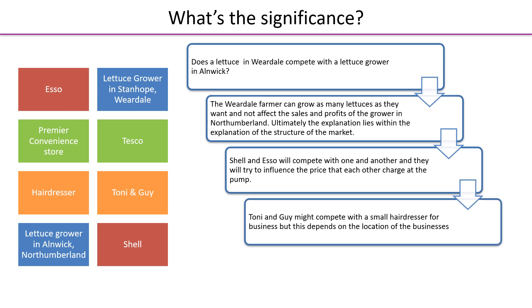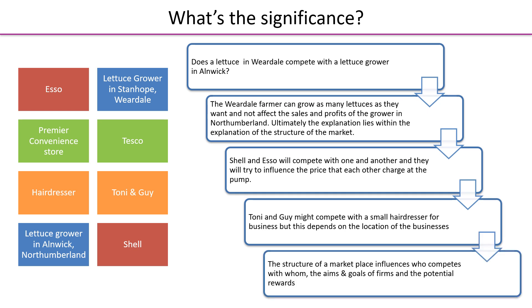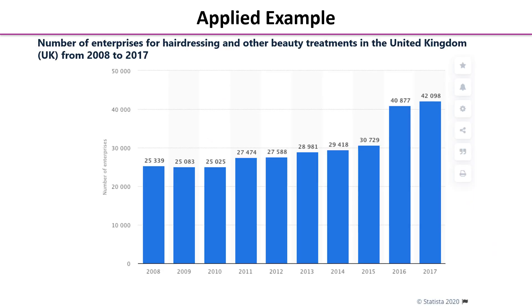Tony and Guy probably does compete with small hairdressers in the towns where it's located, but a local village hairdresser likely doesn't compete with Tony and Guy, who tend to be in large towns. So the structure of the marketplace influences who competes with whom, what their aims and goals are, and the potential rewards they can earn.